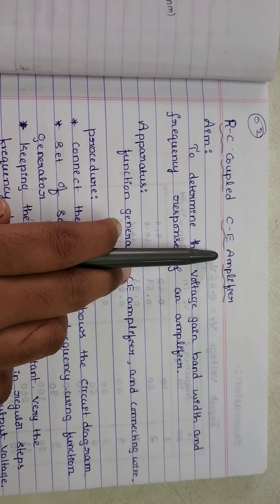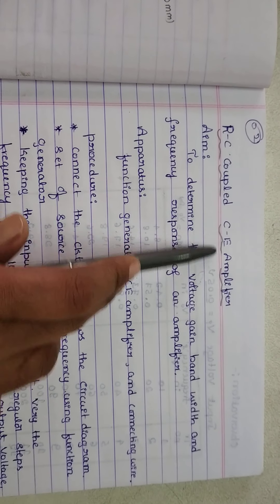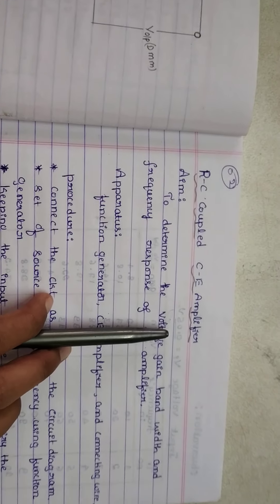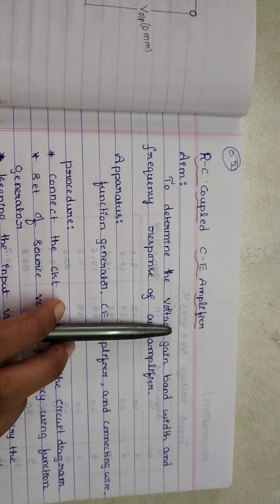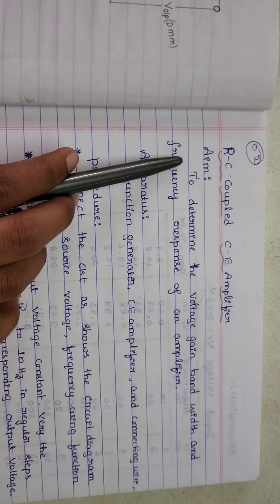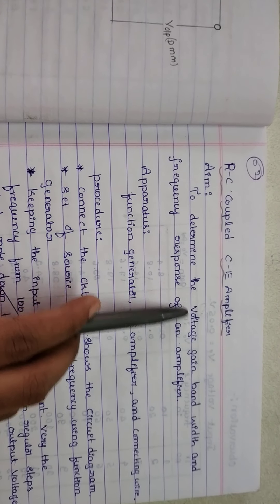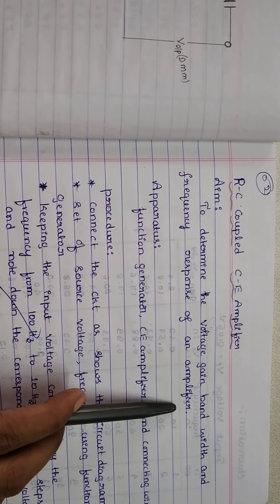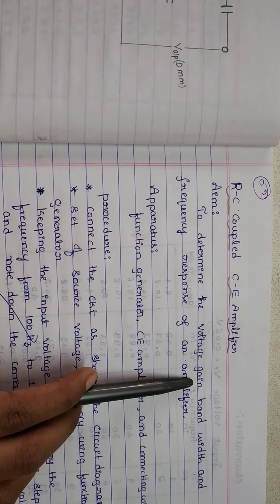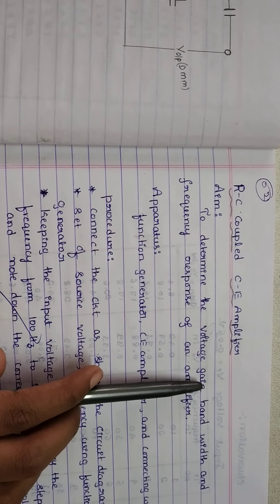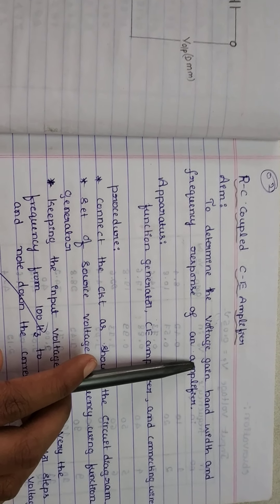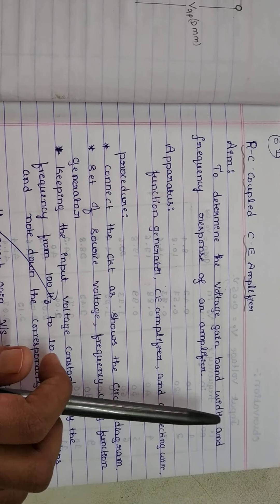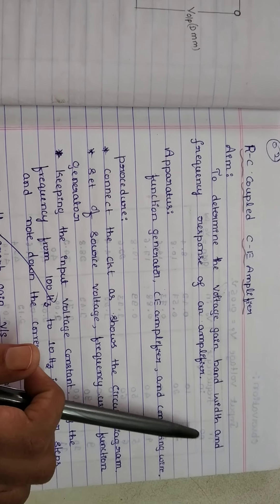CE amplifier means common emitter amplifier. An amplifier is an electronic device which increases the strength of the input signal. In this experiment we have to determine the voltage gain, bandwidth, and frequency response of an amplifier. Voltage gain means the ratio of the output voltage to the input voltage, and bandwidth means the frequency difference between the upper frequency and lower frequency.